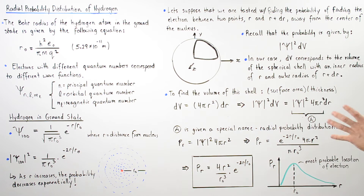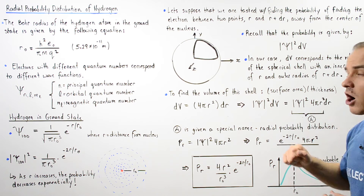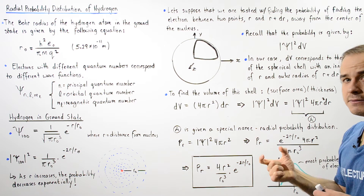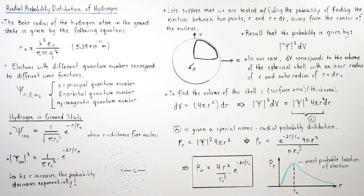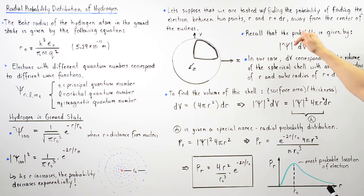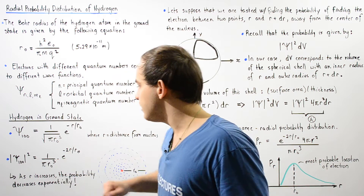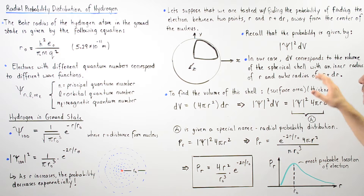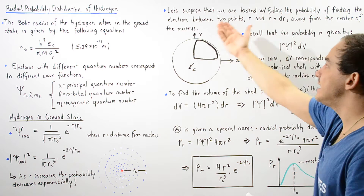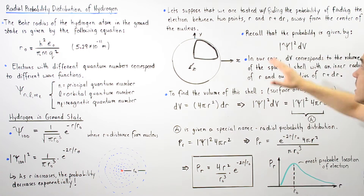Now suppose we are tasked with finding the probability of finding the electron between two random points away from the center of the nucleus, given by r and r plus dr, where dr is simply an infinitely small distance. To find the probability we have to take the product of the square of the absolute value of psi and dV. We know what psi squared is, but what exactly is dV? Let's realize what type of shape we are actually dealing with.